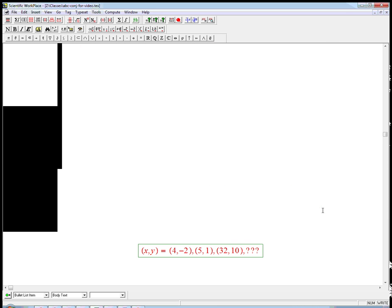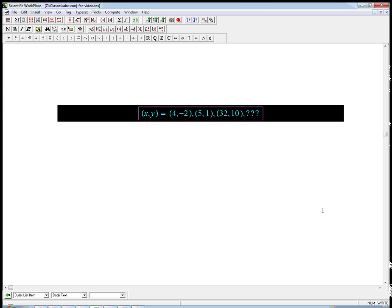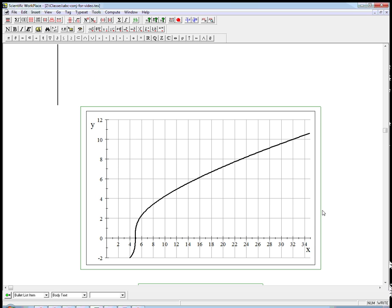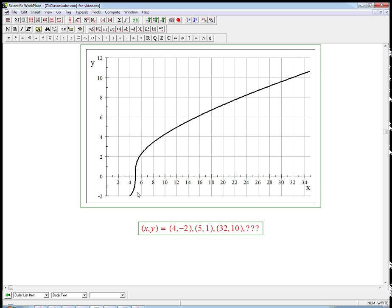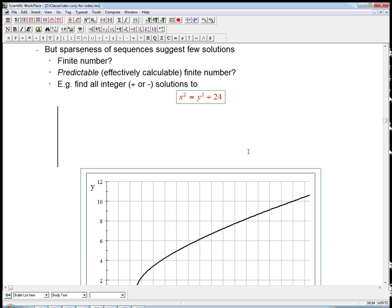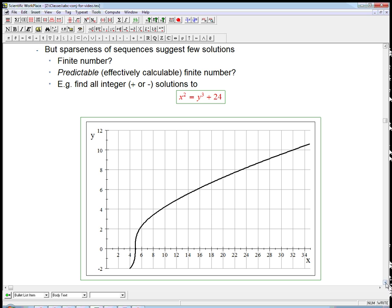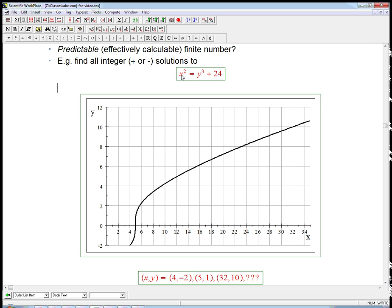Well, here are three of the solutions. Let me just get it together with the picture. So 4, minus 2 right here. 5, 1. And 32, 10. If you look at the equation, 16 equals 24 minus 8. That's from this. 25 is 1 plus 24. And 1024, 32 squared, is 1,000 plus 24.